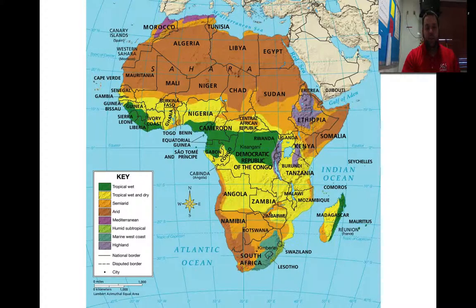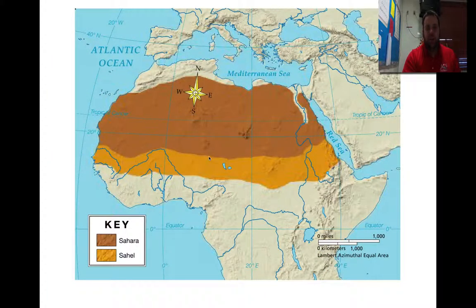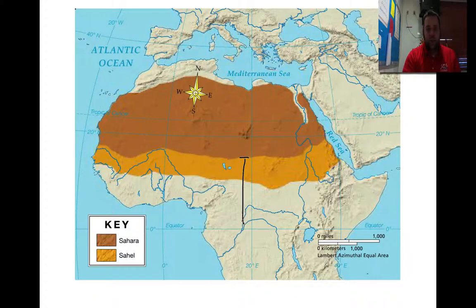Down in this region here is where we're talking about those two southern deserts. Up here is the Sahara, and here's the Sahel as a transition zone. Notice that it transitions into a tropical wet and dry region, and then into the tropical wet closer to the equator. It's in a very short span — not even 20 degrees of latitude — that it goes from desert to tropical rainforest.